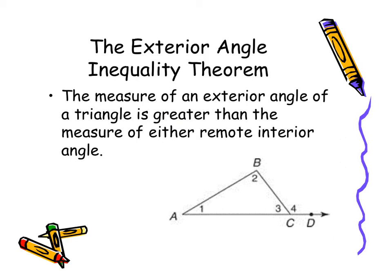Our exterior angle inequality theorem states that the measure of an exterior angle of a triangle is greater than the measure of either remote interior angle. Our exterior angle here is angle 4, so the measure of angle 4 is going to be greater than either remote interior angle. Our remote interior angles are 1 and 2 — the ones that are not touching angle 4. So angle 4 is greater than angle 1, and angle 4 is greater than angle 2.